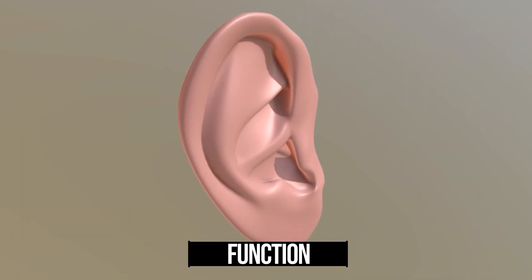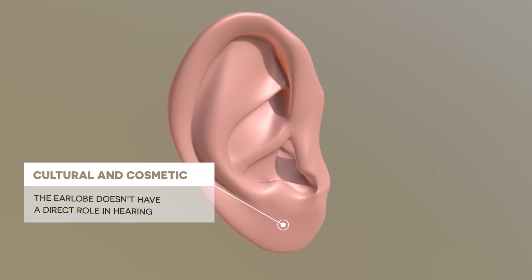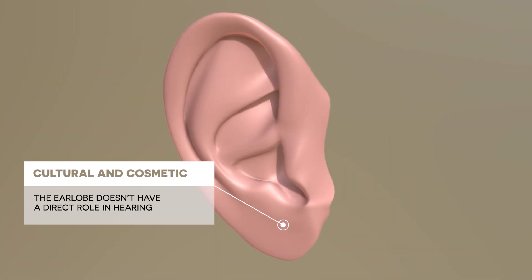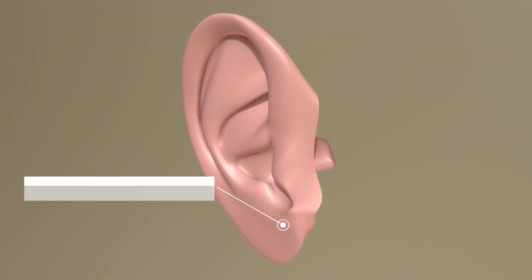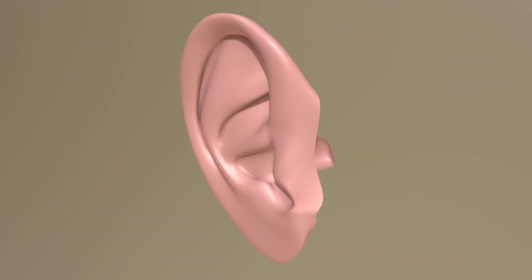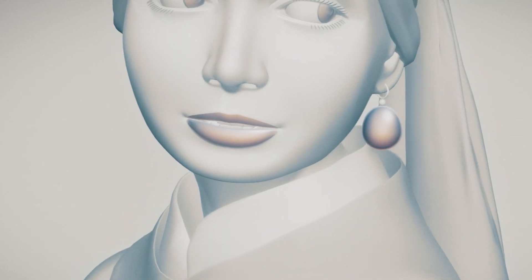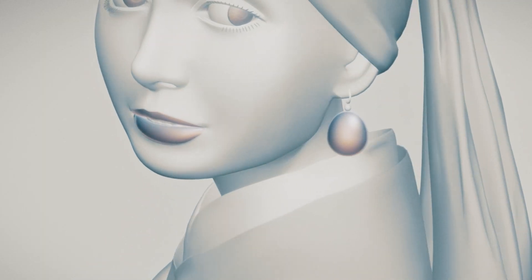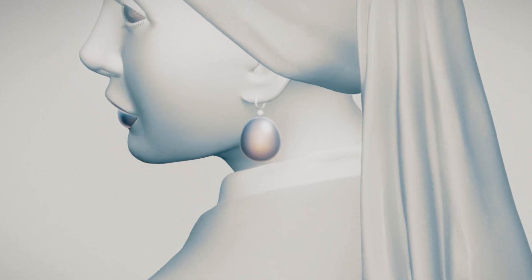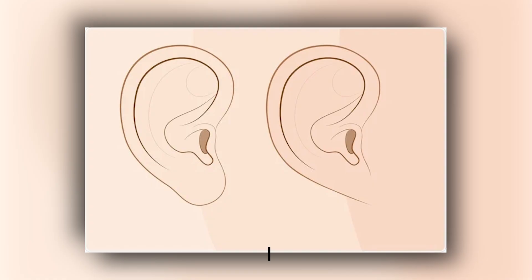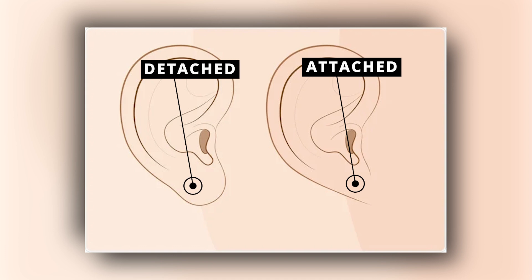The earlobe doesn't have a direct role in hearing. Its significance is more cultural and cosmetic, often being a site for jewelry, earrings, and body modification. The characteristic of having attached or detached earlobes is also a commonly cited example of a simple genetic trait.